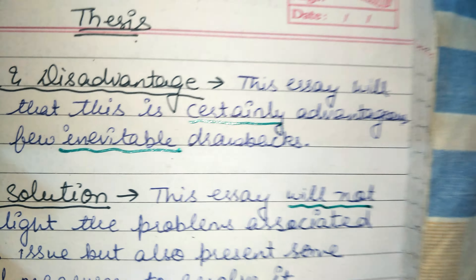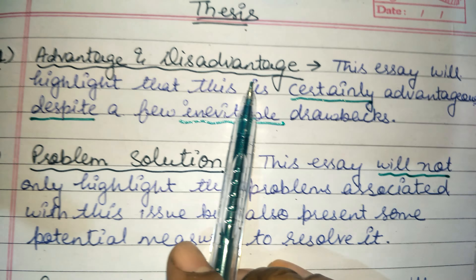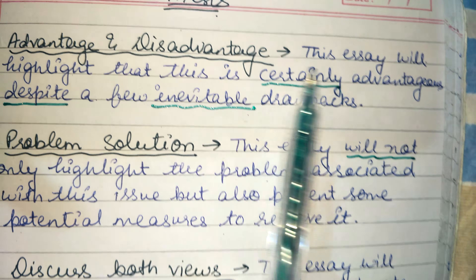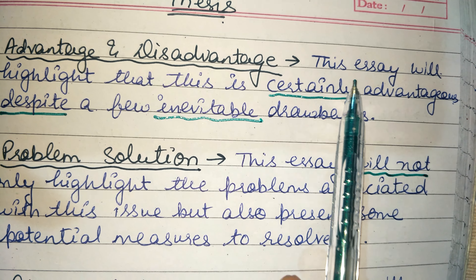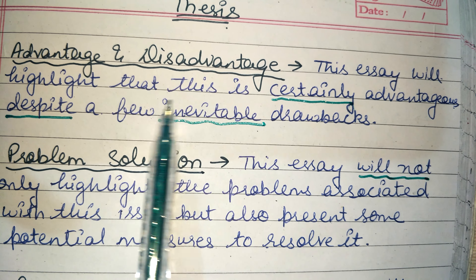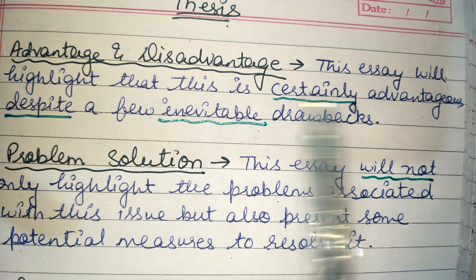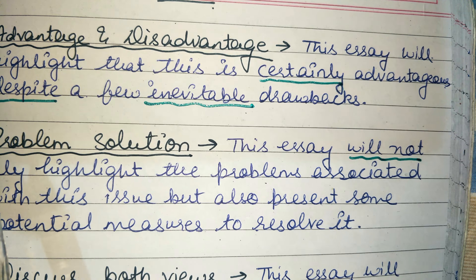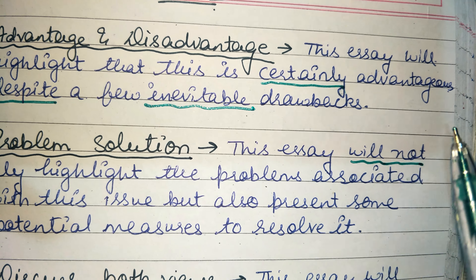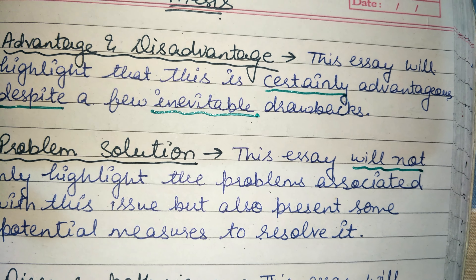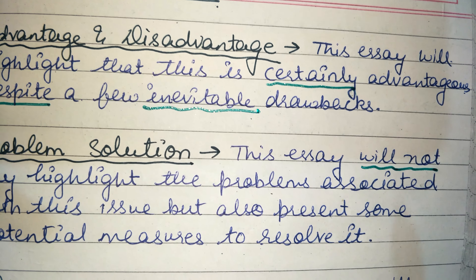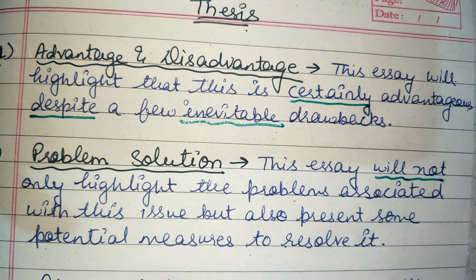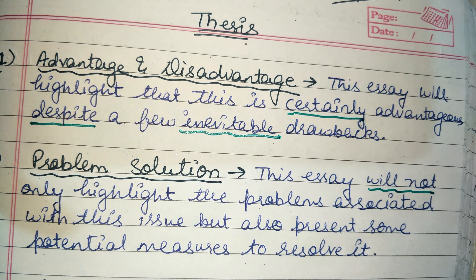Here is our first thesis line, which is for advantages and disadvantages. In an advantages and disadvantages type of essay, we can write: 'This essay will highlight that this is certainly advantageous despite a few inevitable drawbacks.' Most students write 'this essay will elaborate the reason behind...' with subsequent clauses, but that is not good for scoring a high band.